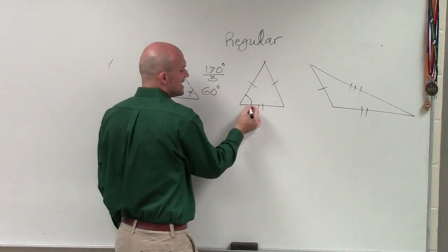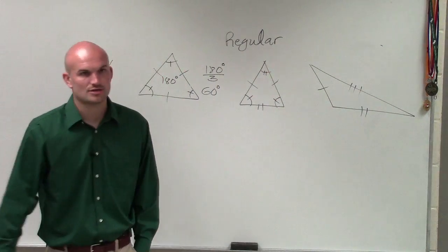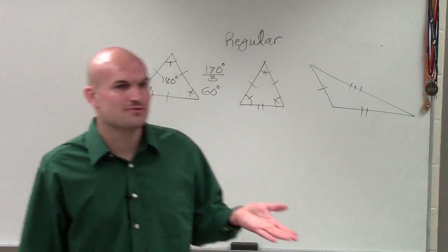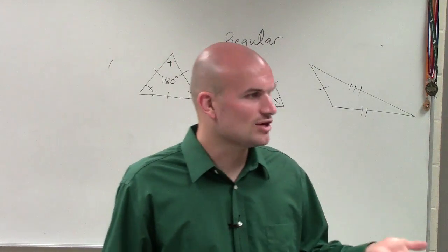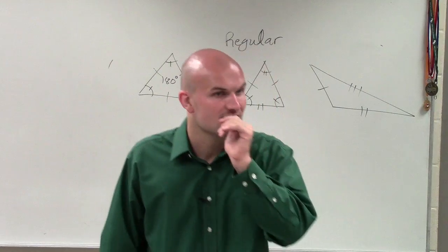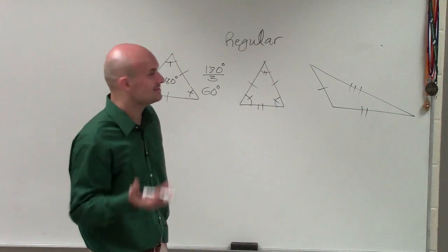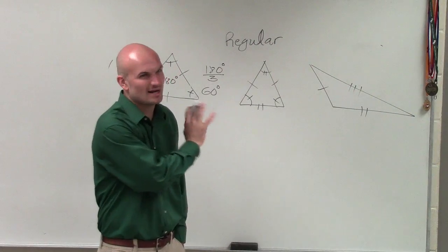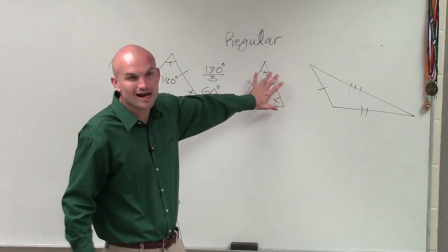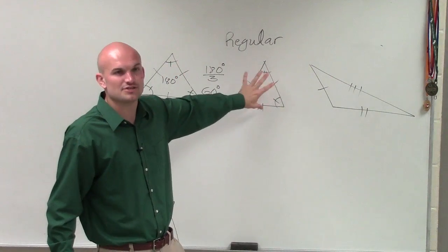Now when you're talking about an isosceles, only two angles are equal in measure. So if we divide by three, that's not going to work because only two of the angles are the same measurement. We'll talk more about how to do that. I'm not really interested in how to find this, we're actually more interested just in this.